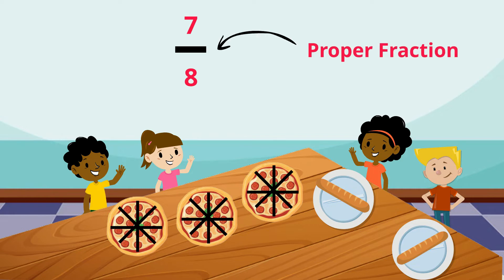7 eighths is what we call a proper fraction. A proper fraction is a fraction with the numerator smaller than its denominator. 7 is smaller than 8. A proper fraction is always less than a whole. In this case there is still one slice of pizza left in the box, therefore 7 eighths is a proper fraction.